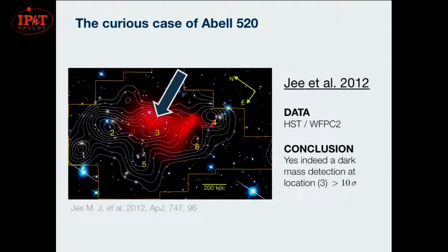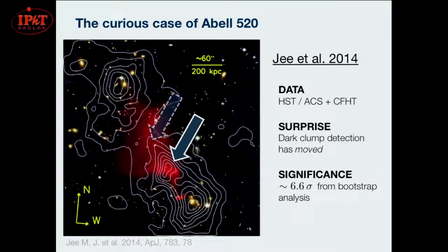Then in that same year, another group using HST data but a different instrument on HST did their own study, and they say — with north pointing to the left now — they do see a dark core there, confirming the original study. Then in 2014 they updated it with new data from HST, and they said actually where they thought they saw one originally there's not one there anymore, but there's one that's a bit closer to peak number four — the most massive one — it's moved about an arc minute toward that direction, and they detect it with high significance.